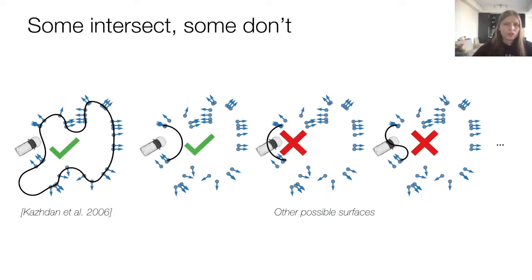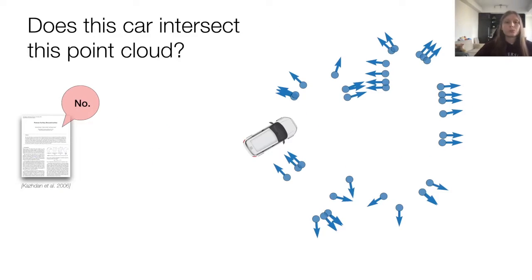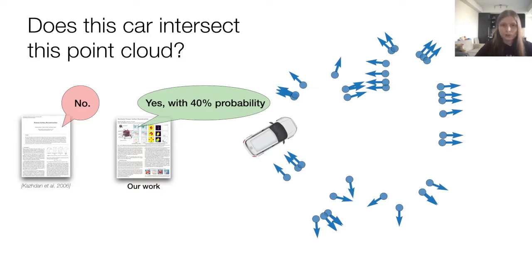Surface reconstruction is an underdetermined problem, so there's probably an infinite set of possible surfaces, and Poisson reconstruction by Kazhdan et al. is only considering one of them. In this work, we propose a way of formalizing this probabilistic view of surface reconstruction, in order to give more complete answers to critical queries like this one.